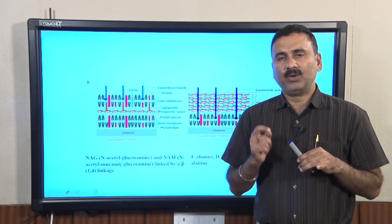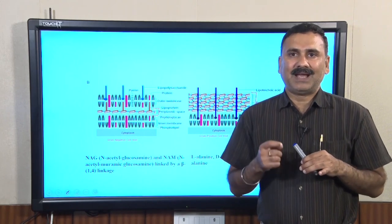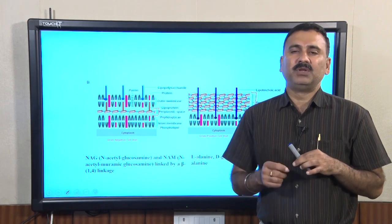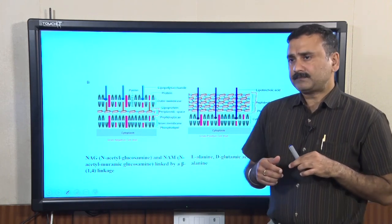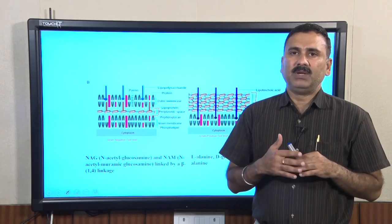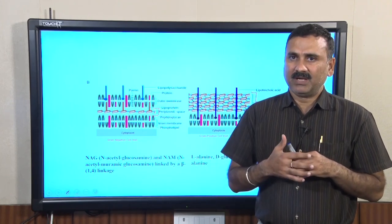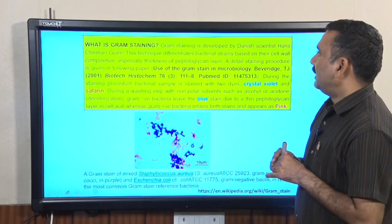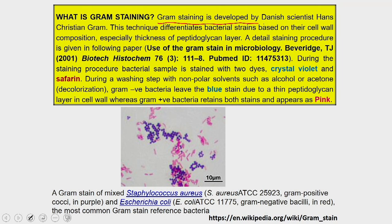One popular staining method was developed by a Danish scientist — the gram stain. Gram staining is a technique developed by Hans Christian Gram, in which bacterial cells are stained by two different dyes: crystal violet, which is blue or violet in color, and safranin, which is red or pink in color.